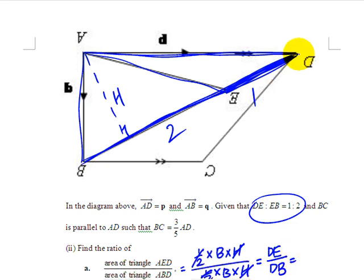DE over DB. And if you go back to the diagram, DE is 1 unit, DB has a total of 3 units. And this is how you get the ratio of the area.